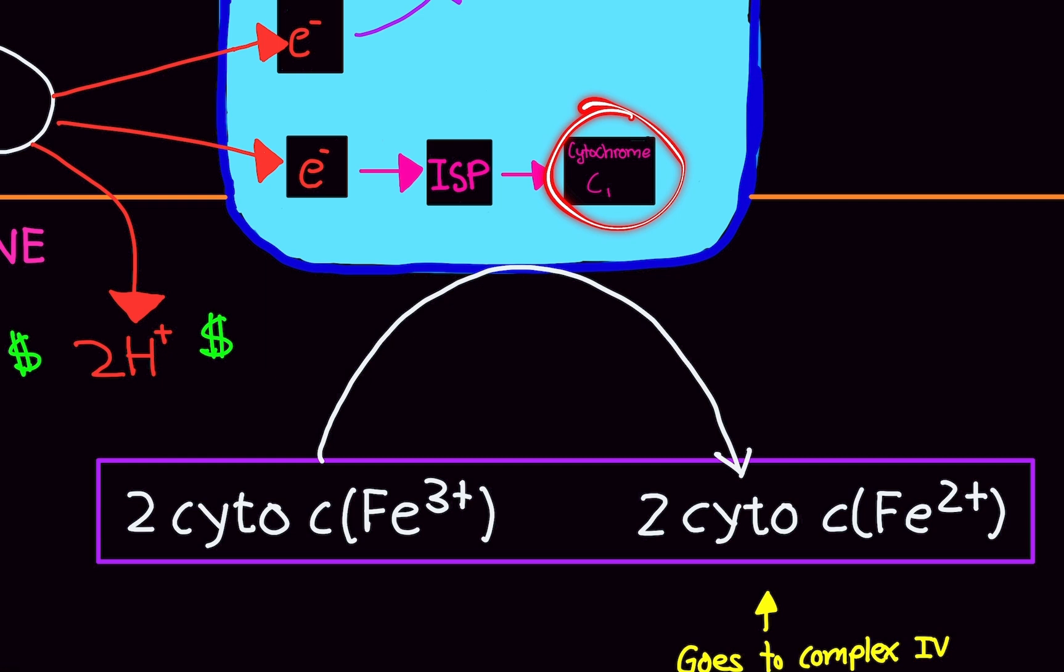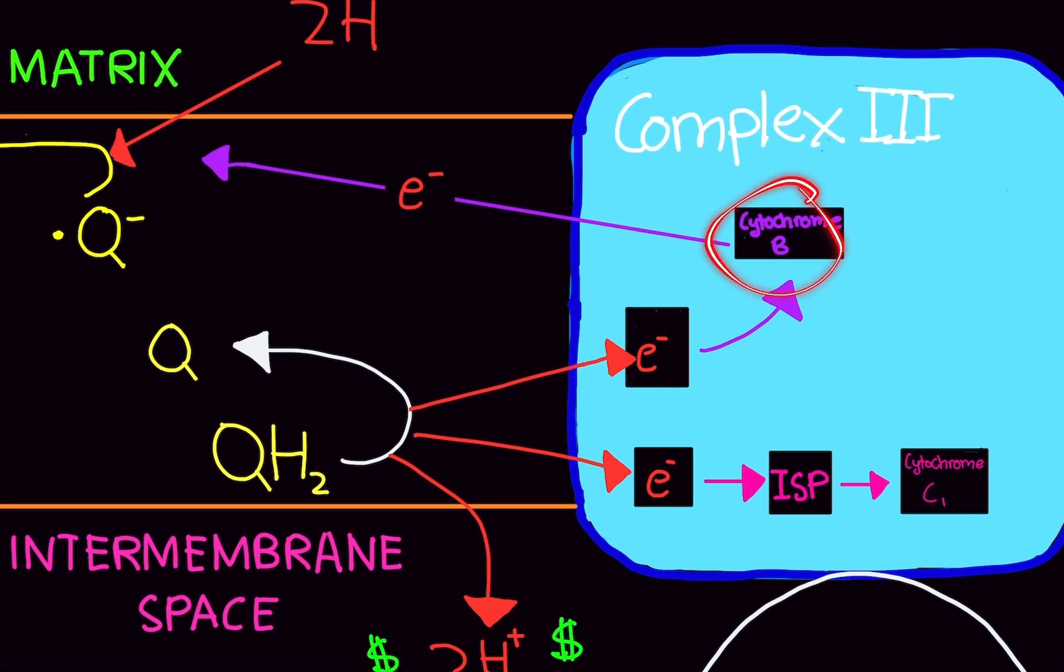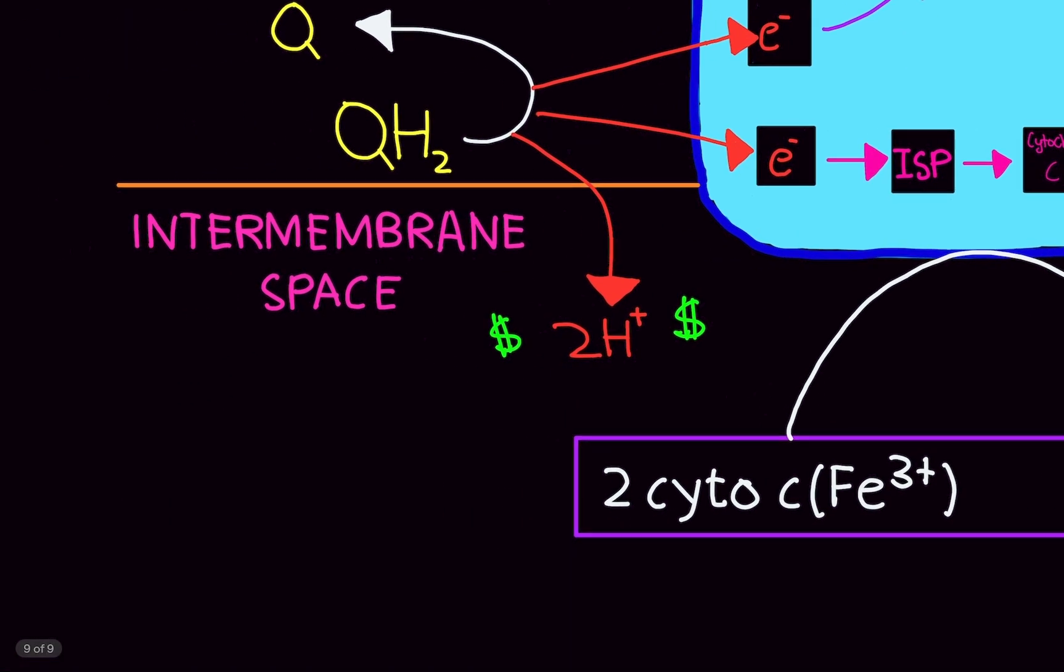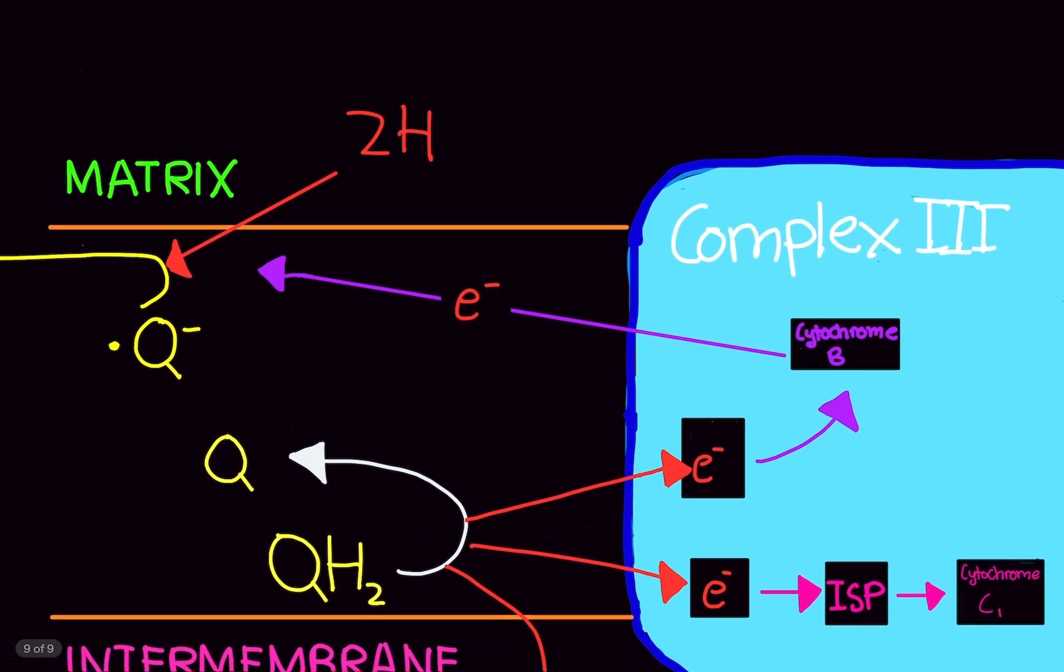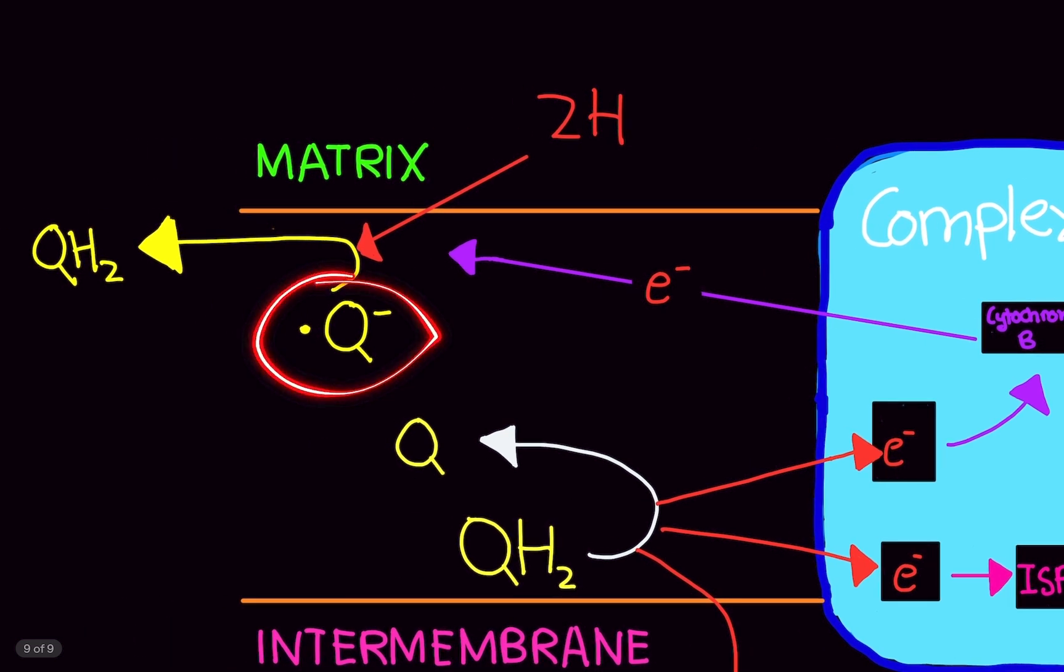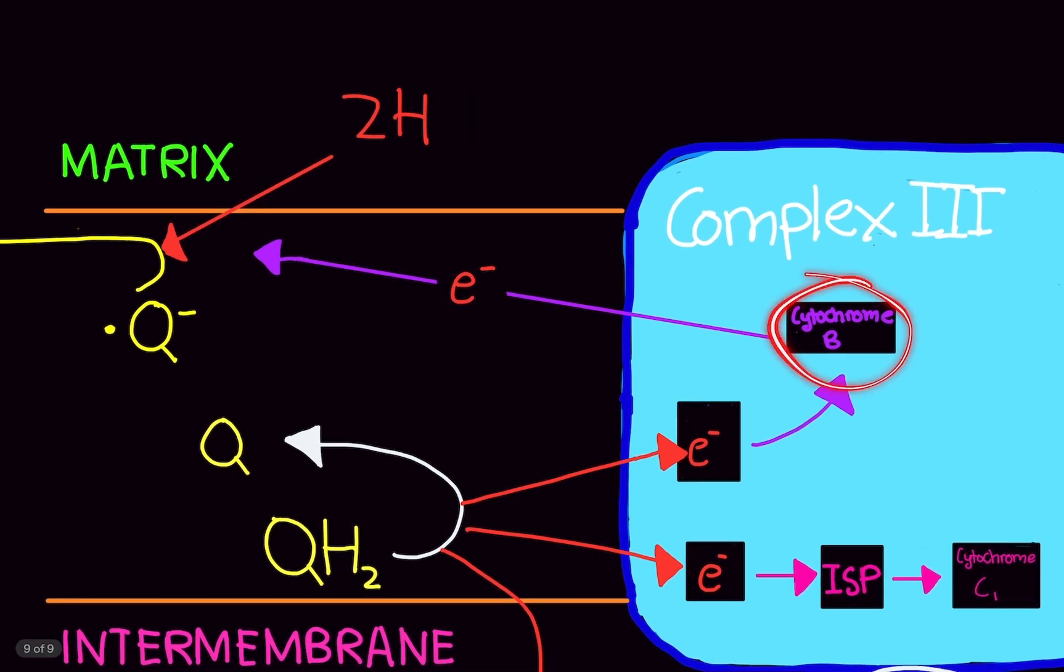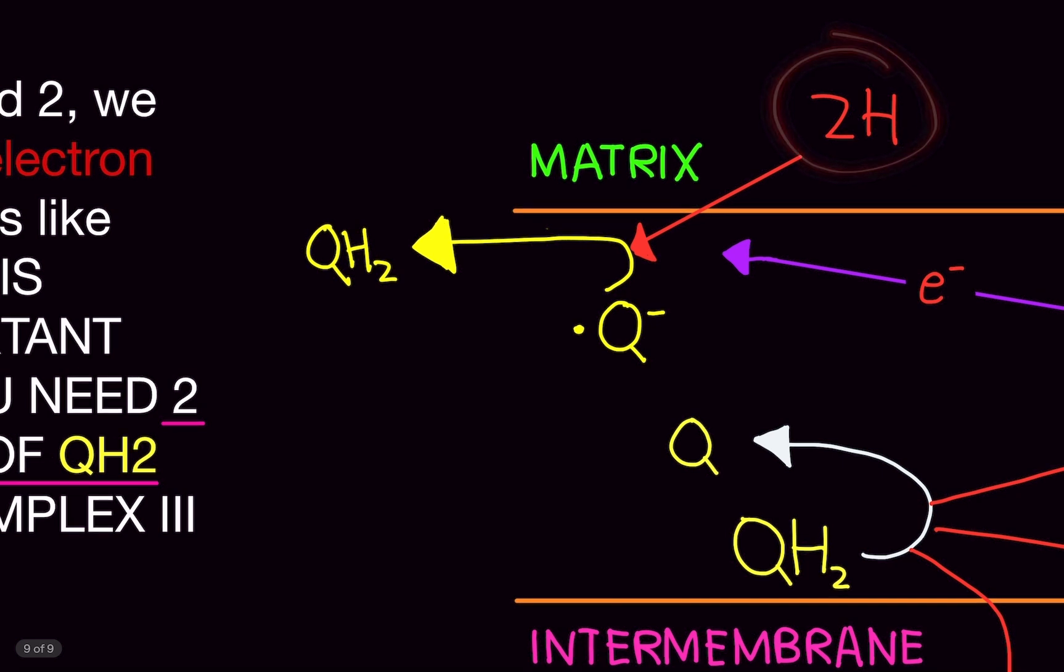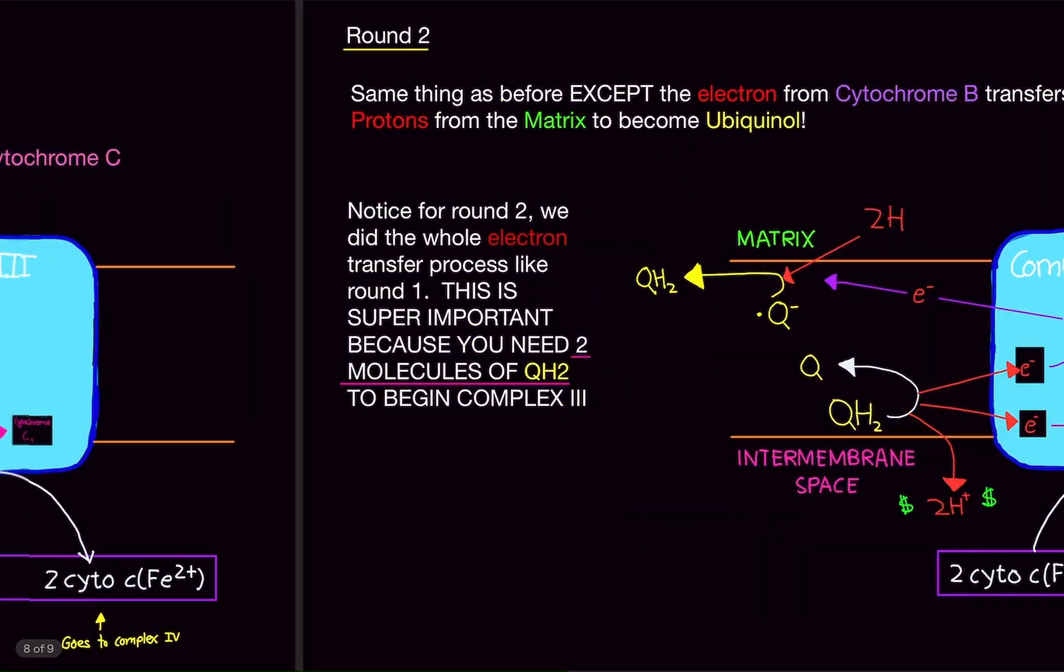The other electron is going to go to cytochrome B. Doing this, we'll shove two more protons into the intermembrane space. Doing so, we're going to use that semiquinone we have created in the round one. Take that electron that was being held by cytochrome B. We're going to take two protons from the matrix. Combine them all together to make ubiquinol, which we're going to go back to round one, right here.